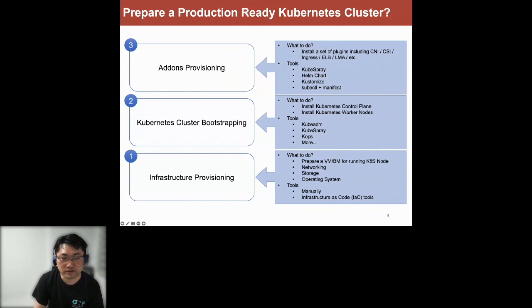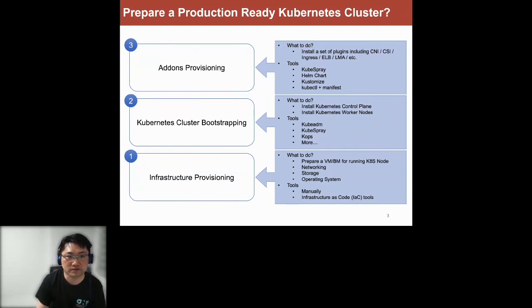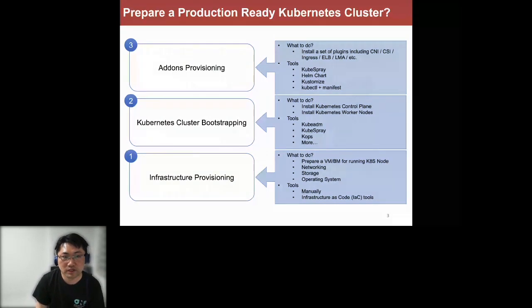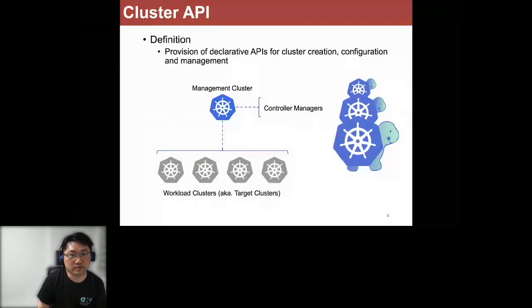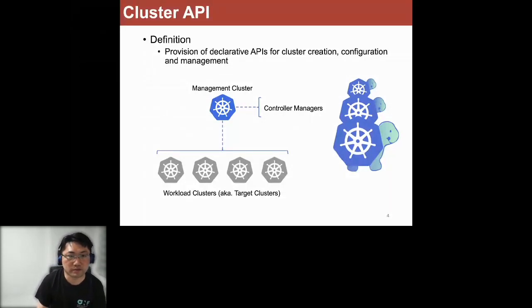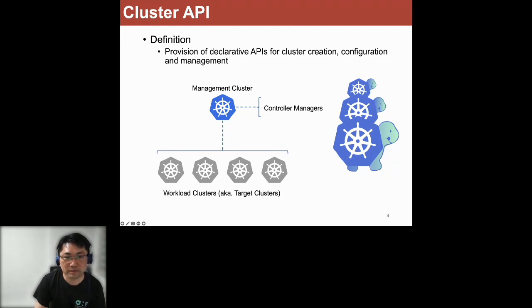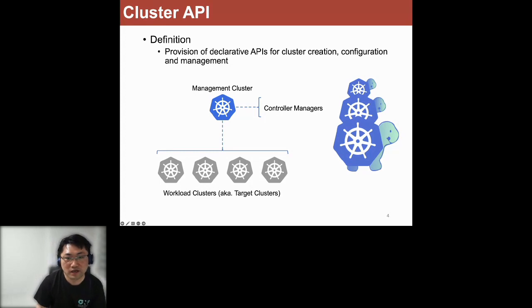Finally, after bootstrapping the cluster, we install a set of add-ons including HLM, CNI, and CSI plugins to make sure the Kubernetes cluster functions well. With the help of the Cluster API from the CNCF community, you can provision the Kubernetes cluster in a declarative way. We have a management cluster, and with it we can spawn a set of workload clusters, also called target clusters.